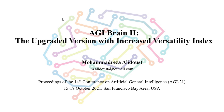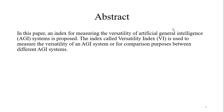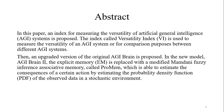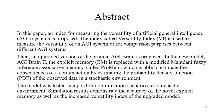In this paper, an index for measuring the versatility of artificial general intelligence or AGI systems is proposed. The index, called versatility index, is used to measure the versatility of an AGI system or for comparison between different AGI systems. Then an upgraded version of the original AGI Brain is proposed. In the new model called AGI Brain 2, the explicit memory is replaced with a modified Mamdani fuzzy inference associated memory called PROMEM, which is able to estimate the consequences of a certain action by estimating the probability density function (PDF) of the observed data in a stochastic environment. The model was tested in a portfolio optimization scenario as a stochastic environment, and simulation results demonstrate the accuracy of the novel explicit memory as well as the increased versatility index of the upgraded model.